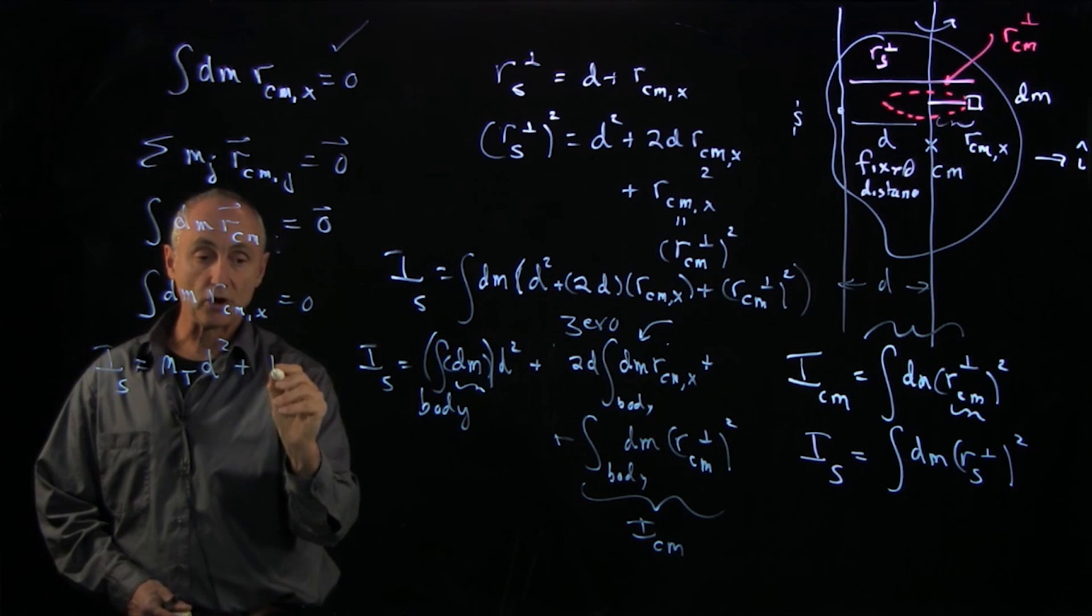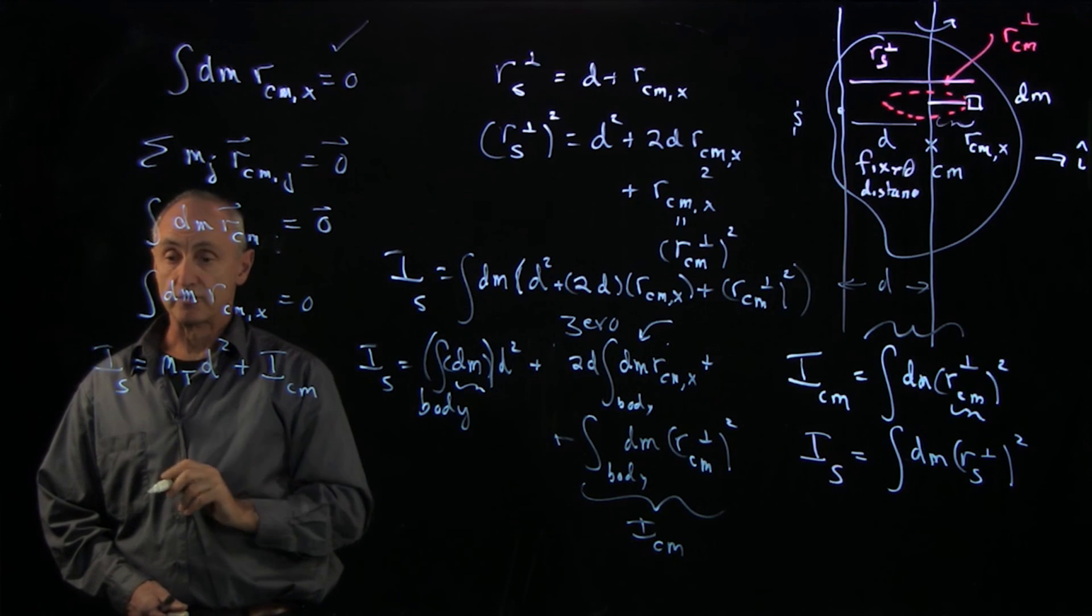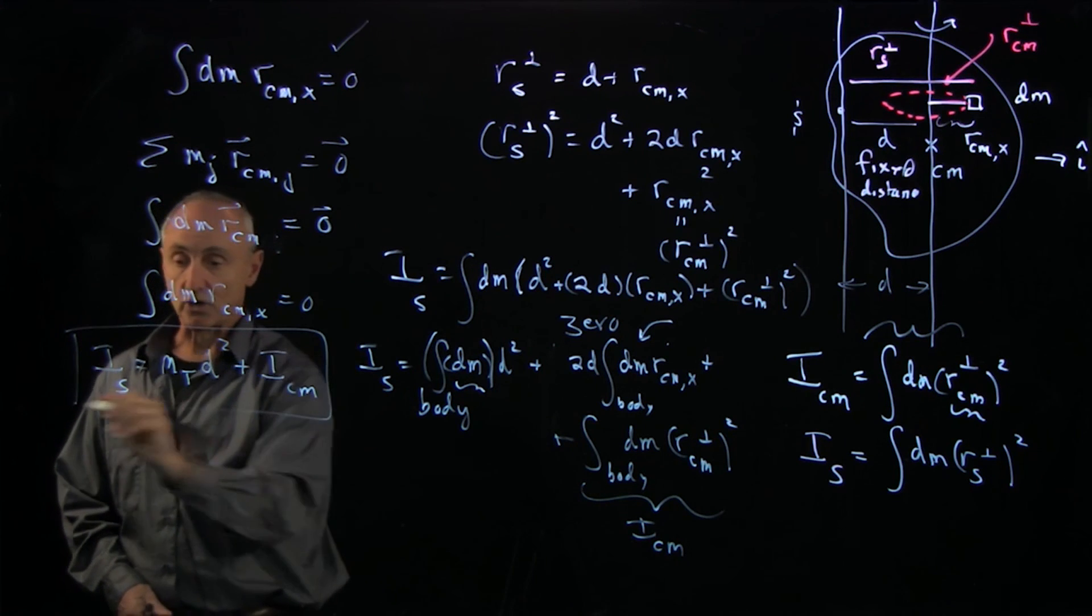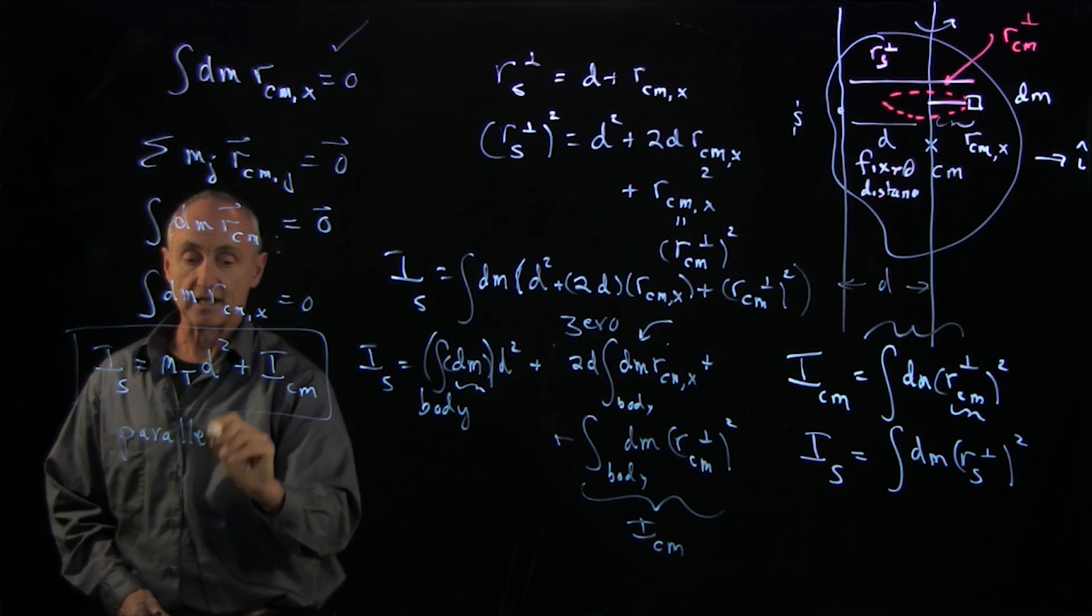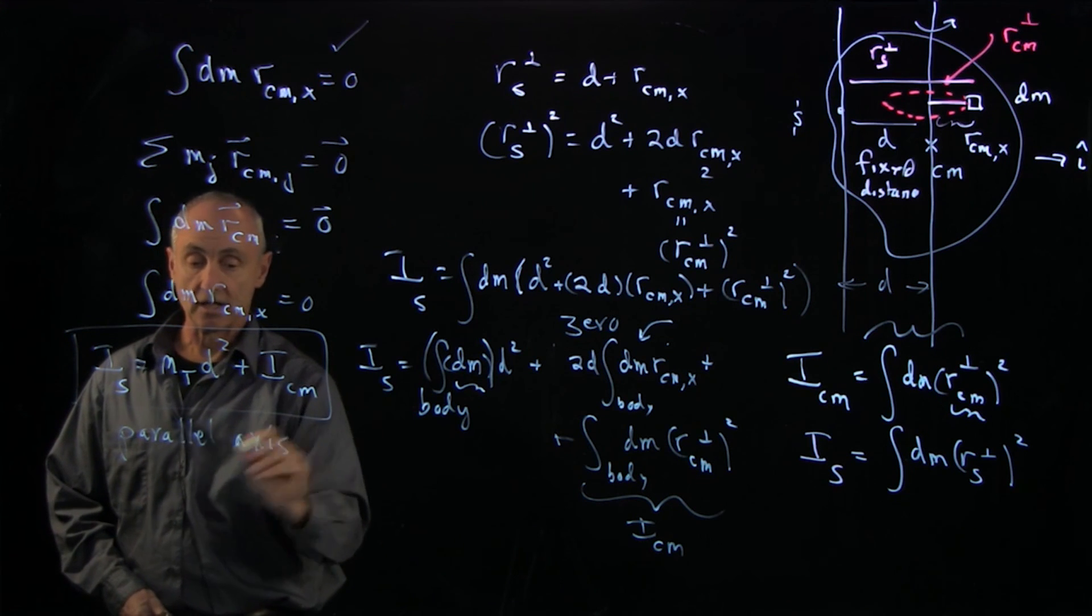Plus the moment of inertia about the center of mass. And this result is called the parallel axis theorem.